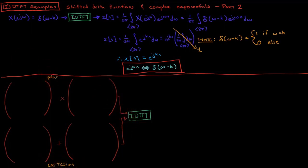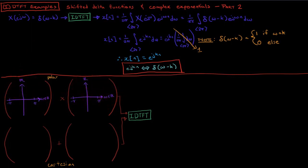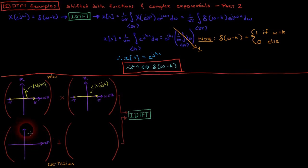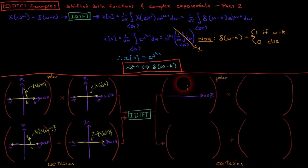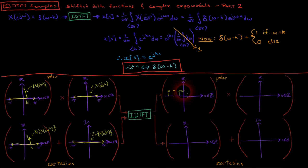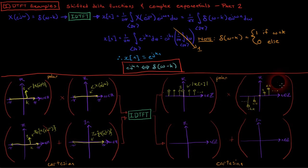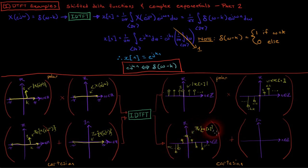In polar coordinates, we illustrate the absolute value of X(e to the j omega) as an impulse of area 1 at omega equals k, and the phase of X(e to the j omega) as 0 for all omega. In Cartesian coordinates, we illustrate the real part of X(e to the j omega) as an impulse of area 1 at omega equals k, and the imaginary part as 0 for all omega. We know the output of the inverse DTFT will be complex in this case, so we will plot it in both polar and Cartesian coordinates. In polar coordinates, note that the magnitude is a constant 1 for all n, and the phase has slope k. In Cartesian coordinates, recall Euler's formula to split the complex exponential into real and imaginary parts.